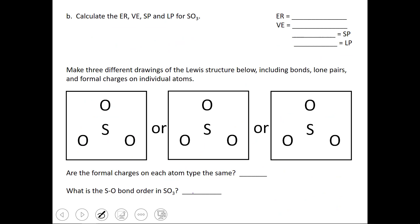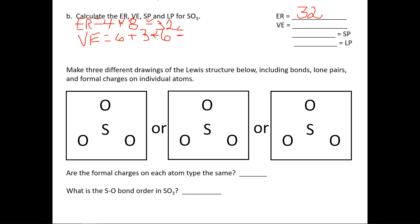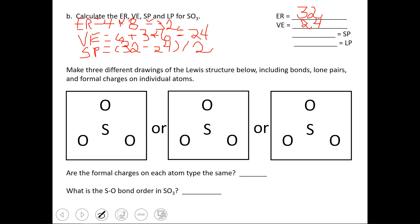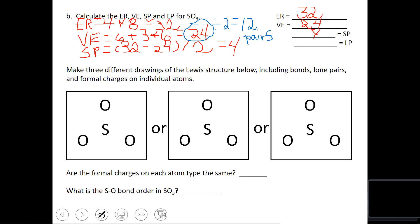Now let's do the same process for SO3. Our electrons required is 4 atoms times 8, which is 32 electrons. Our valence electrons will be 6 for the sulfur and 3 times 6 for the 3 oxygens, giving us 24. Our shared pairs will be 32 minus 24 divided by 2, giving us 4. The number of valence electrons is 24; dividing by 2 gives 12 total pairs. Those pairs can be shared or lone pairs. We already have 4 shared pairs, so 12 minus 4 tells us we need 8 lone pairs.